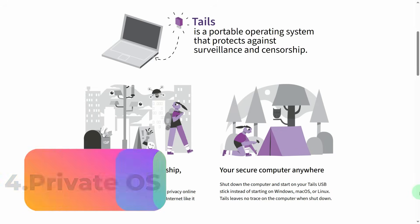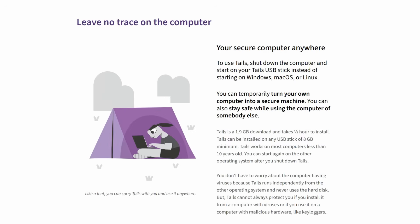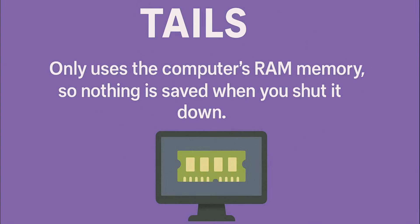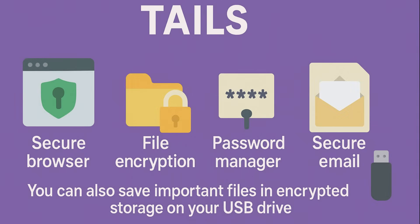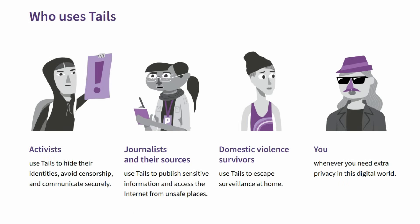The next thing is a secure portable operating system called Tails. Tails is a special operating system for people who want privacy and anonymity. You can run it from a USB drive so nothing is installed on the computer and no trace is left after you finish. Tails sends all internet traffic through Tor to hide your IP and location. It only uses the computer's RAM, so nothing is saved when you shut it down. Tails includes a secure browser, file encryption, password manager and secure email. You can also save important files in encrypted storage on your USB drive. It's suitable for journalists, IT specialists and anyone who works with confidential information.